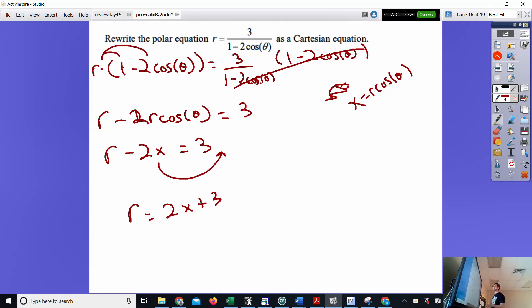Now it's not going to be obvious what you do here, but I know that x squared plus y squared is r squared. So what I'm going to do is I'm going to square both sides because that will give me an r squared which can become that. If I square the left, I square the right. r squared is, if we foil that out, 4x squared plus 12x plus 9. I can replace r squared with x squared plus y squared.